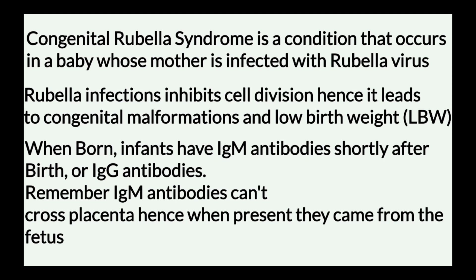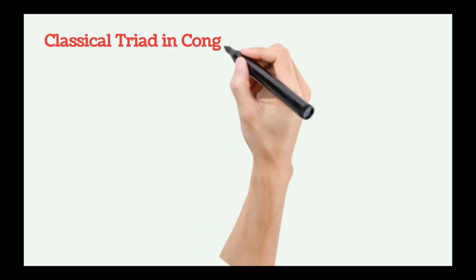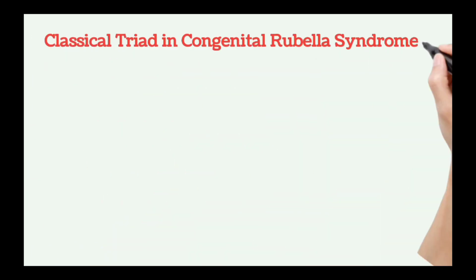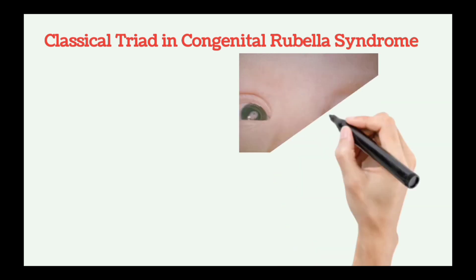Infants born from an infected mother will have IgM antibodies shortly after birth, or IgG antibodies. Remember, IgM antibodies cannot cross the placenta, so if present they come from the fetus. This is a key cross-check we use in diagnosing Congenital Rubella Syndrome.